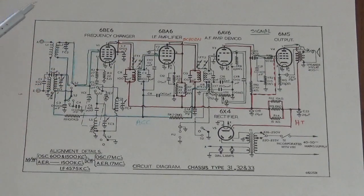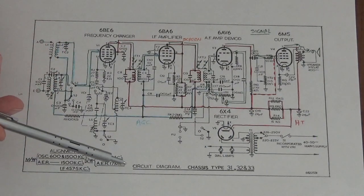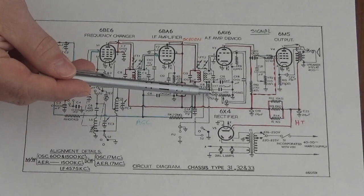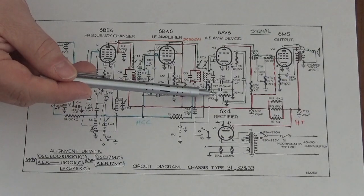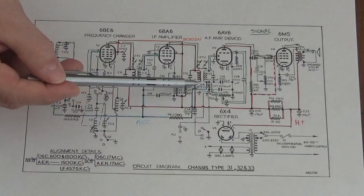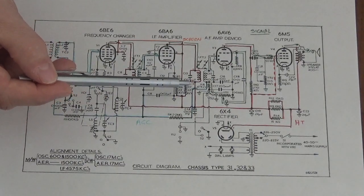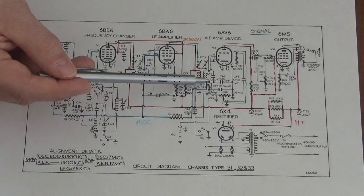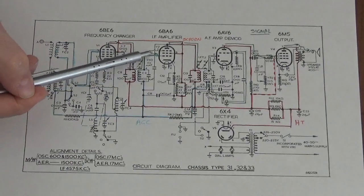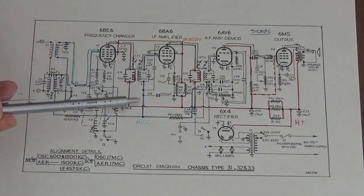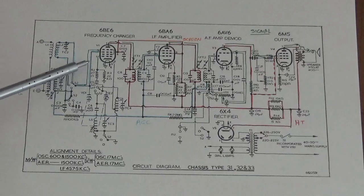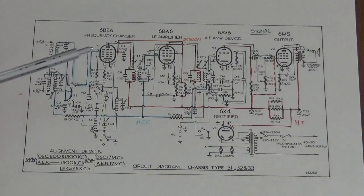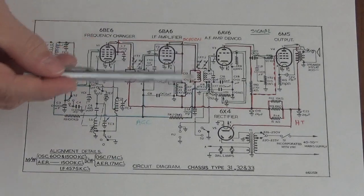The demodulated signal appearing across this variable resistor is also used for automatic gain control or sometimes called AVC automatic volume control. This DC signal is fed back through to the control grid on the IF amplifier and through this switching network back onto this other grid in the mixing valve. As signal increases we get some negative feedback to make sure we don't overdrive these valves.